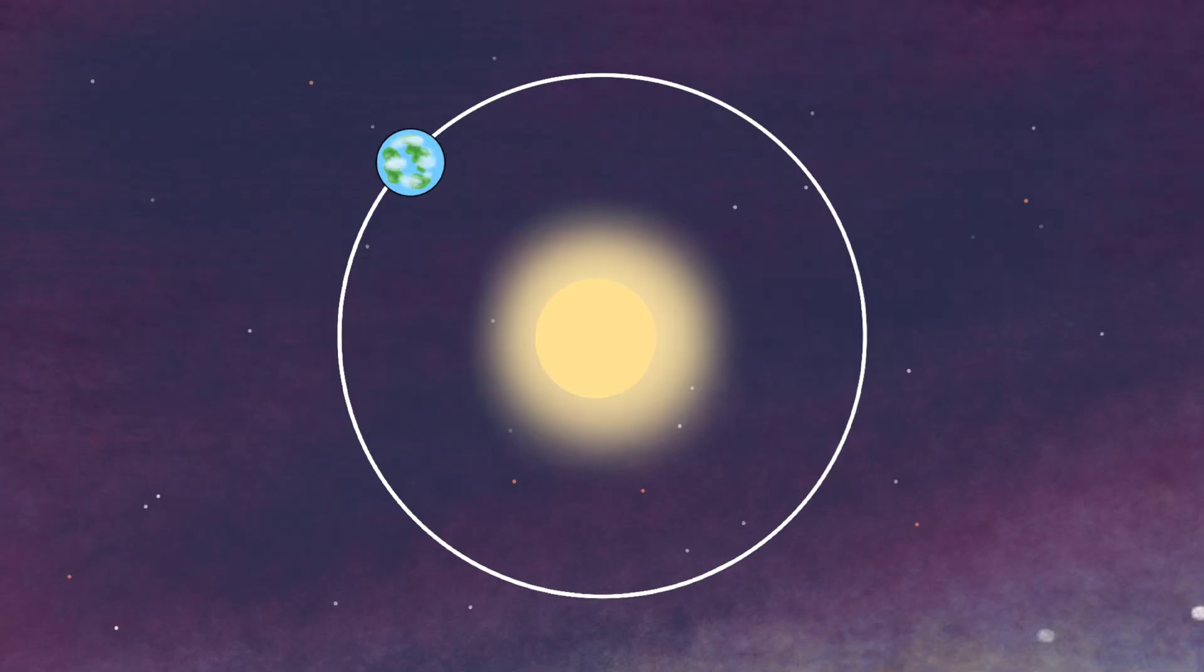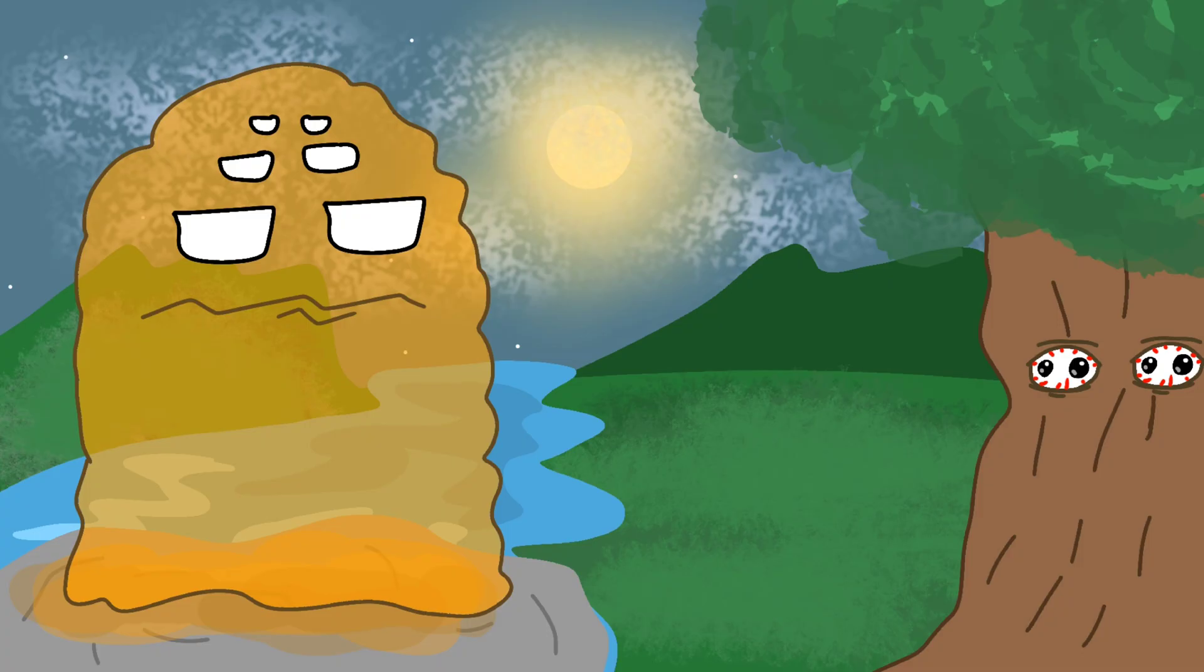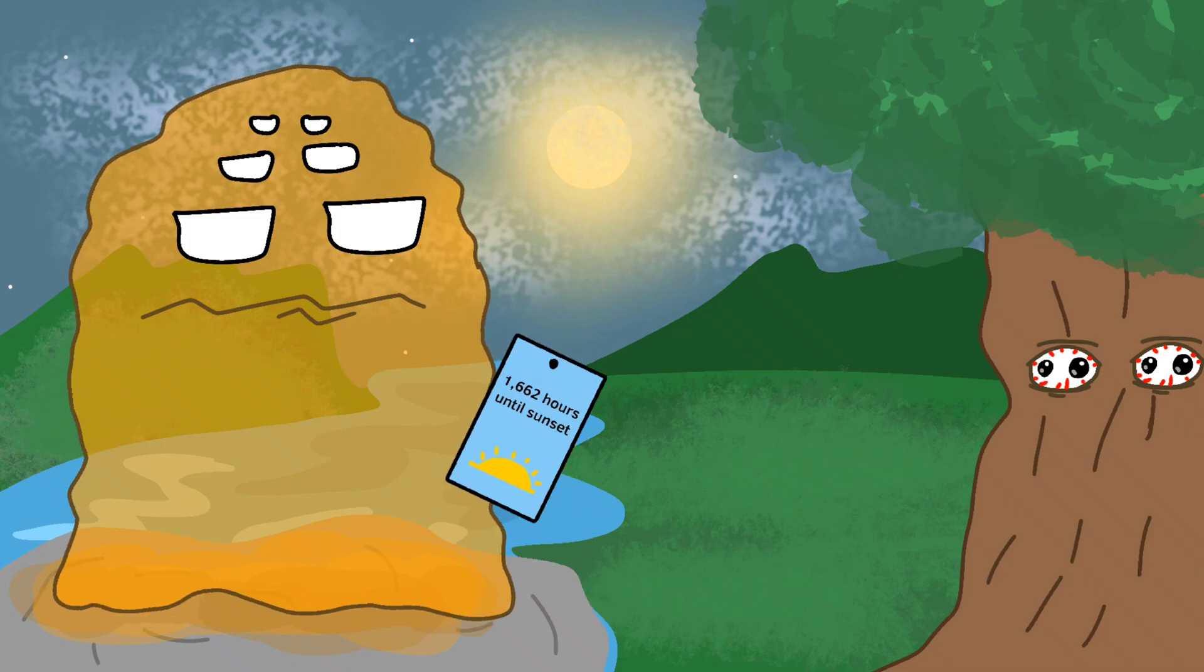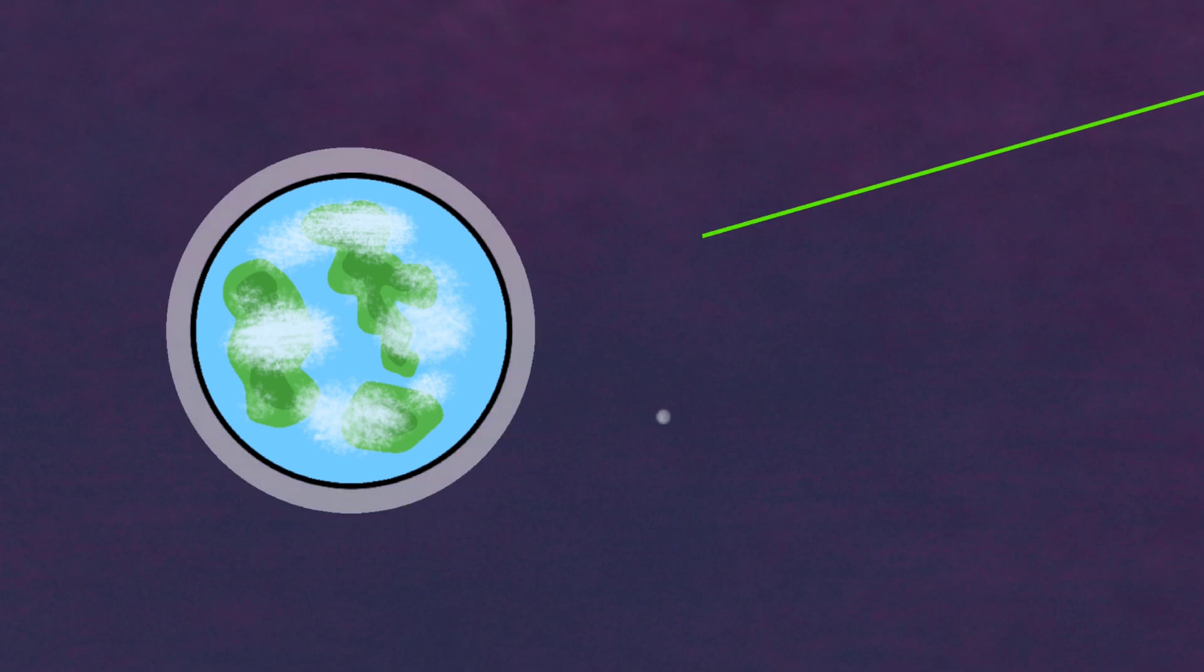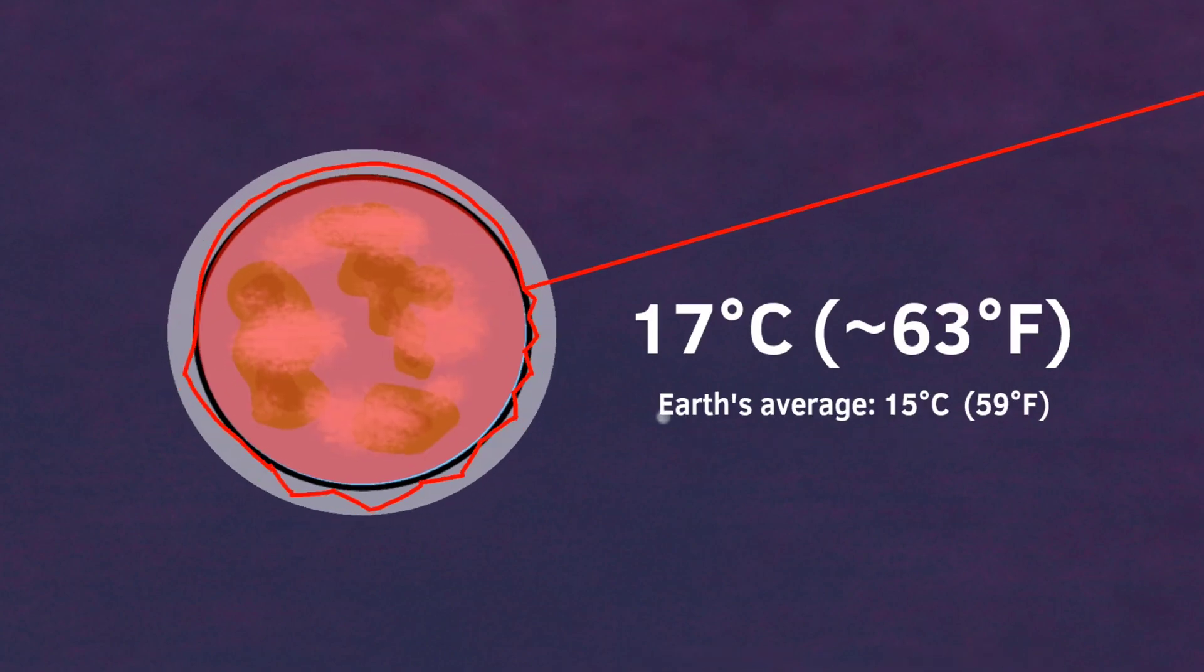452b's orbit is only 20 days longer than ours at 385 days, however the length of a day on this planet is currently unknown. Because 452b's star is towards the end of its lifespan and giving off more heat, the planet is likely experiencing a greenhouse effect, which causes its surface to reach around 17 degrees celsius, and is probably going to get hotter and hotter over time.